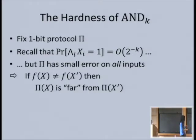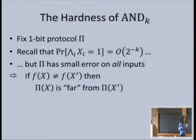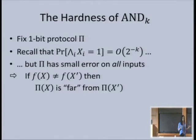In fact, if you give me two inputs x and x' where the AND differs—one is 1^k and the other is anything else—then the distribution of transcripts on these two must be different. The protocol has to tell the difference. The notion of farness we want to use leads to several options.